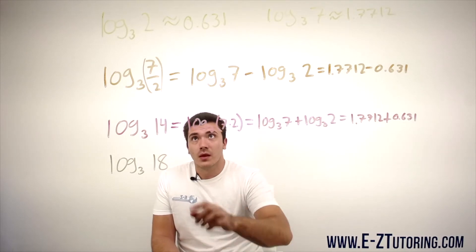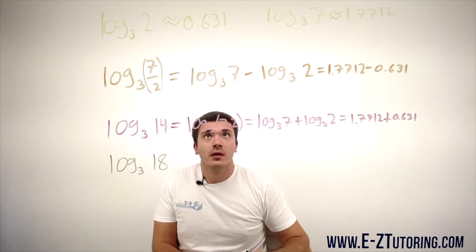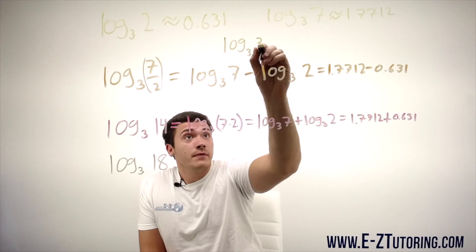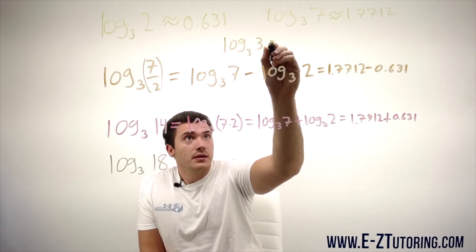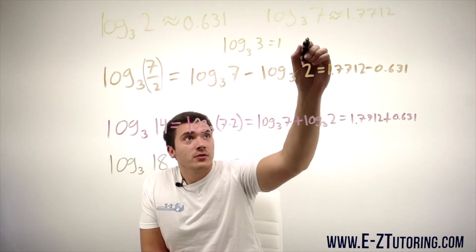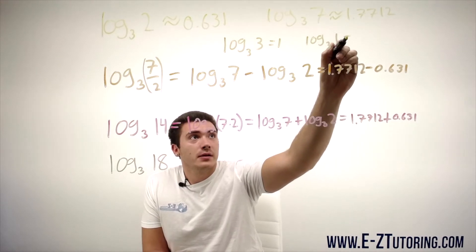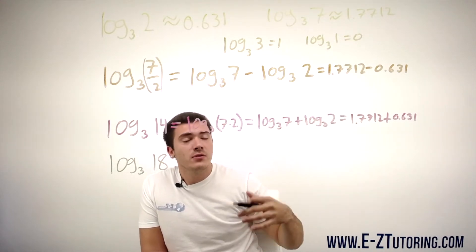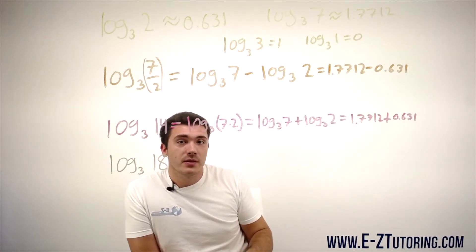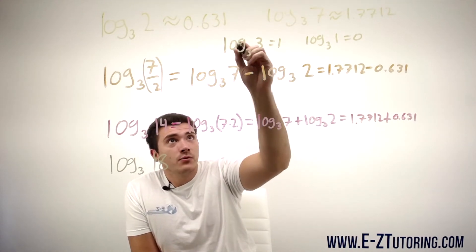But log base 3 is what we're using, right? We also know that log base 3 of 3 equals 1. And we also know that log base 3 of 1 equals 0. This one isn't important, we're not going to use this one. But I just want to show you guys the simple things we know about logarithms. This one is true because 3 to the power of 1 equals 3.